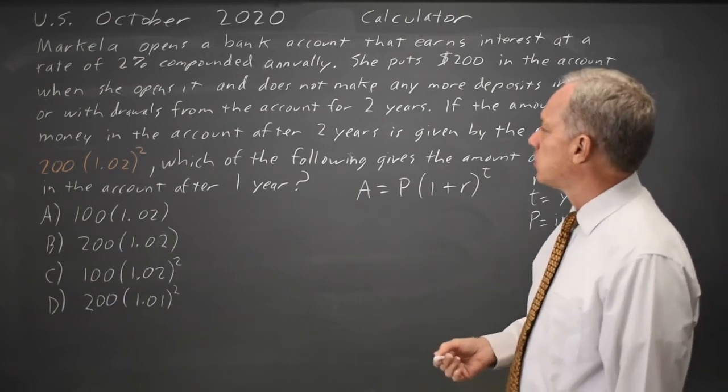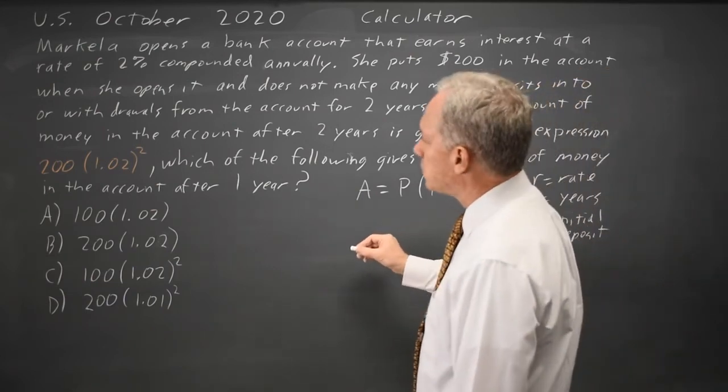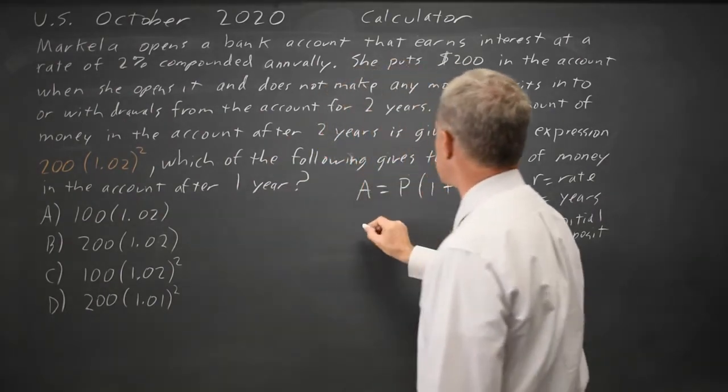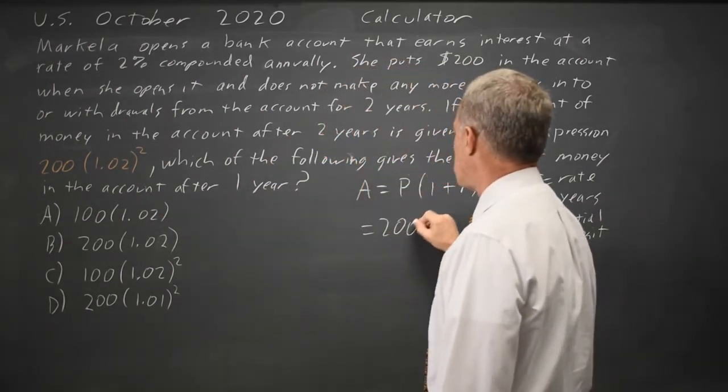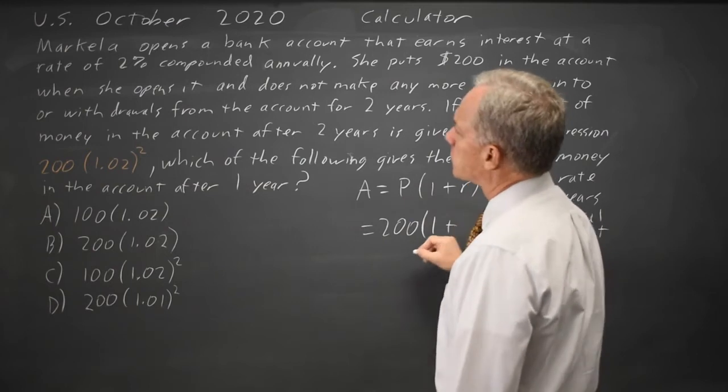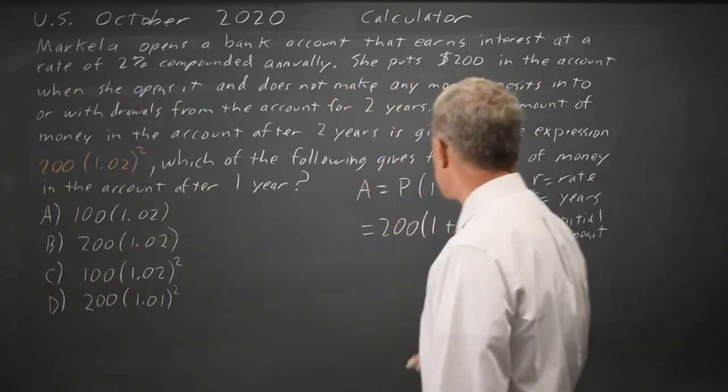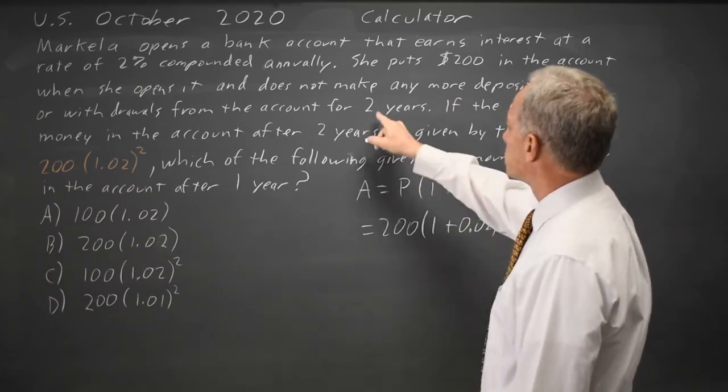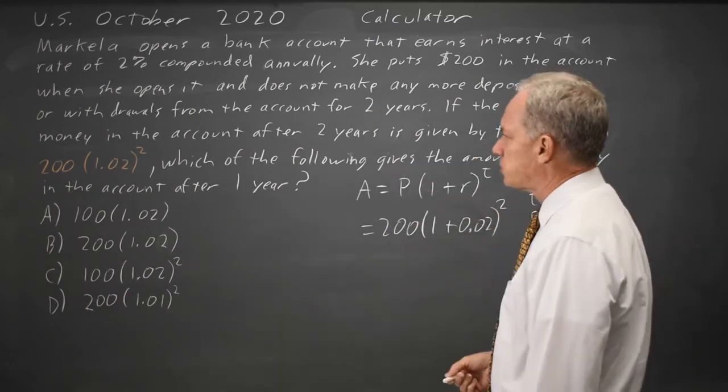So for an interest rate of, for an initial deposit of $200 and an interest rate of 2%, which is 0.02, and a time period of 2 years, the exponent is 2.